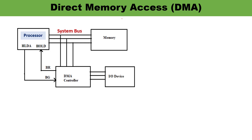Here is another elaborated diagram showing the signals involved. This is the processor system bus — the address bus, data bus, and control bus — along with the memory, DMA controller, and IO devices. For direct memory access, the DMA controller sends a bus request signal (BR) to the processor. This is an active high signal — it is provided on the hold pin of the processor.